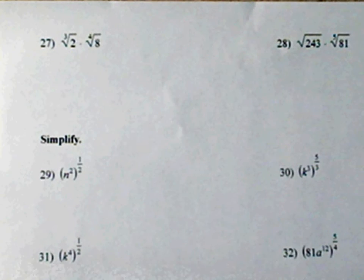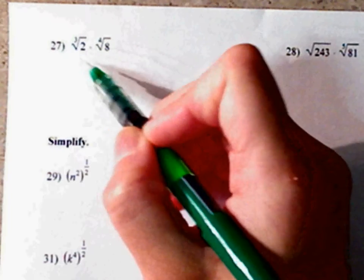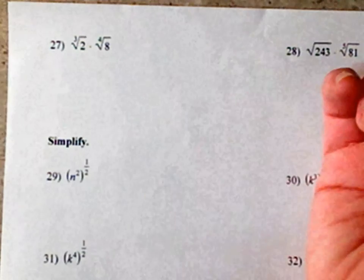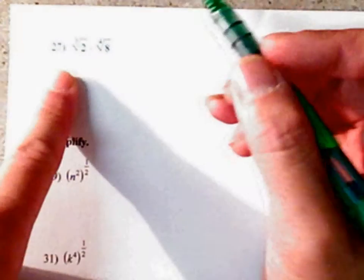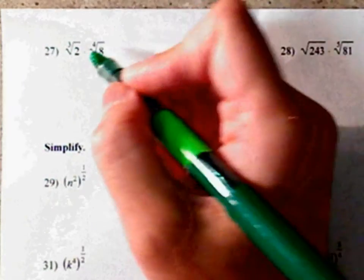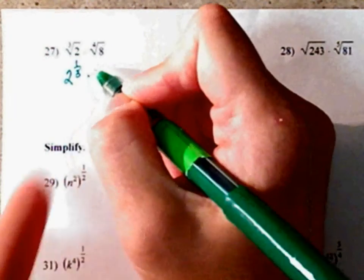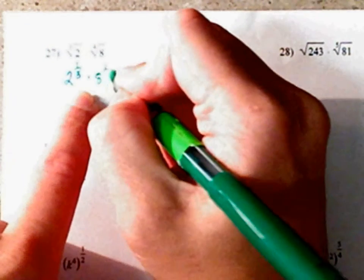On number 27, if your roots have been the same, your index, you could have multiplied 2 times 8, but since they're not, you're going to have to simplify. So before I do all that, I'm actually going to rewrite it in rational exponential form. This is the same thing as 2 to the 1/3 times 8 to the 1/4.